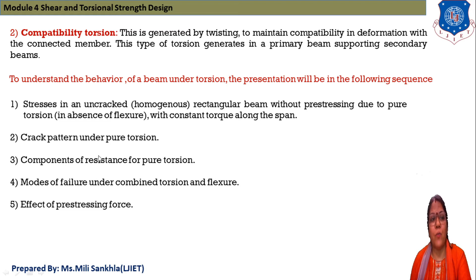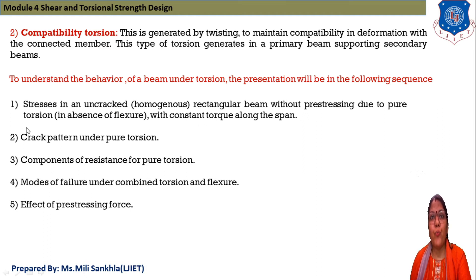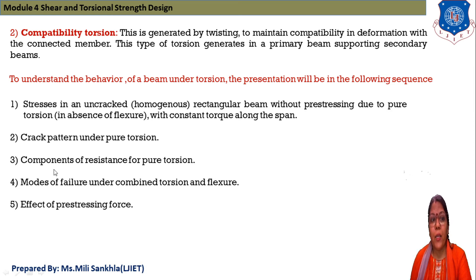The presentation will cover the following sequence to understand how torsion and twisting moment will happen in our beam: first, stress in uncracked rectangular beam due to pure torsion with constant torque along the span; second, crack pattern under pure torsion; third, component of resistance of pure torsion; fourth, mode of failure under combined torsion and flexure; and fifth, effect of prestressing force.